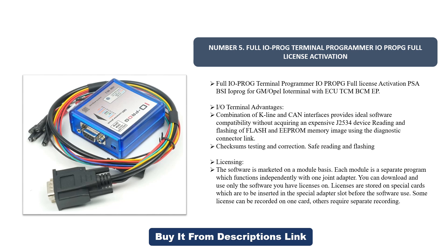Licensing: the software is marketed on a module basis — each module is a separate program which functions independently. With one joint adapter, you can download and use only the software you have licenses for. Licenses are stored on special cards which must be inserted into the special adapter slot before use. Some licenses can be recorded on one card; others require separate recording.